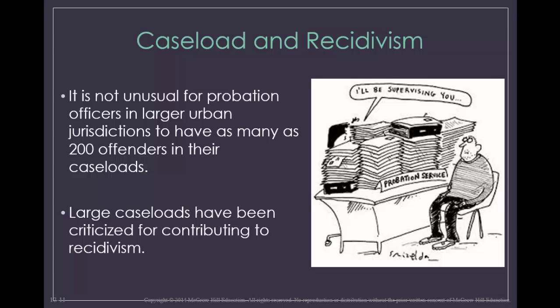One of the other large issues associated with probation is the amount of probationers that are overseen by an individual probation officer, known as caseload. Large caseloads promote recidivism because of the inability of probation officers to provide sufficient supervision and services. Smaller caseloads actually inflate recidivism numbers because of greater scrutiny that is placed on the individual probationer's activities. So either way, you're running into caseload problems. It sounds like caseloads have to be somewhere in the middle, but what is the right number for different probation officers to have?